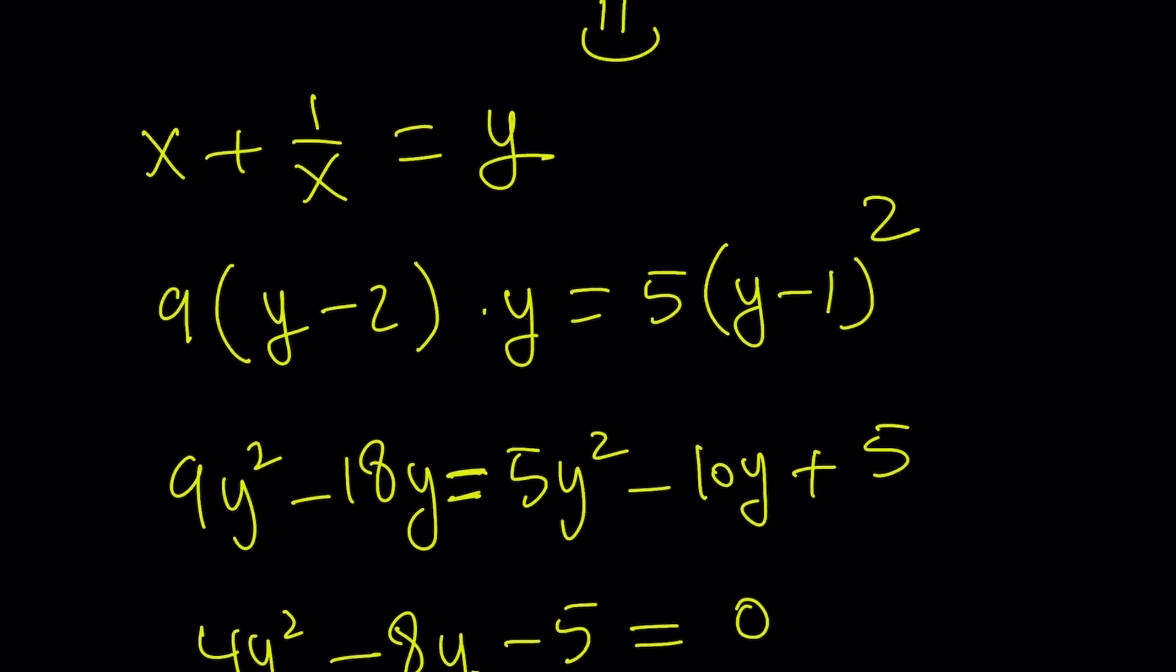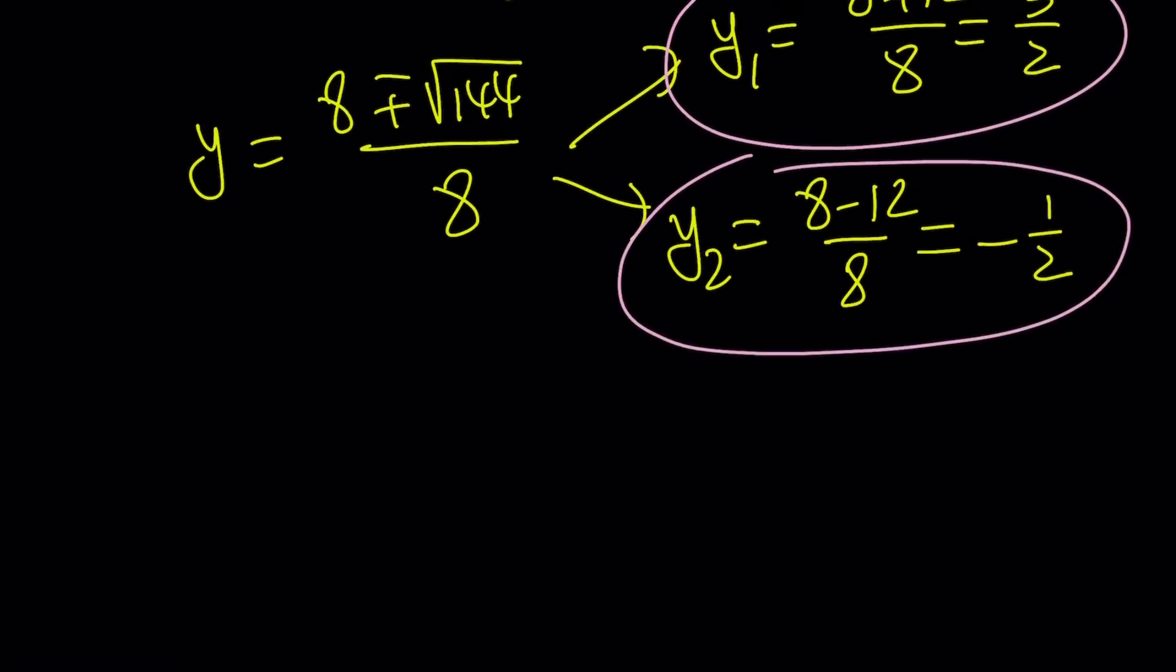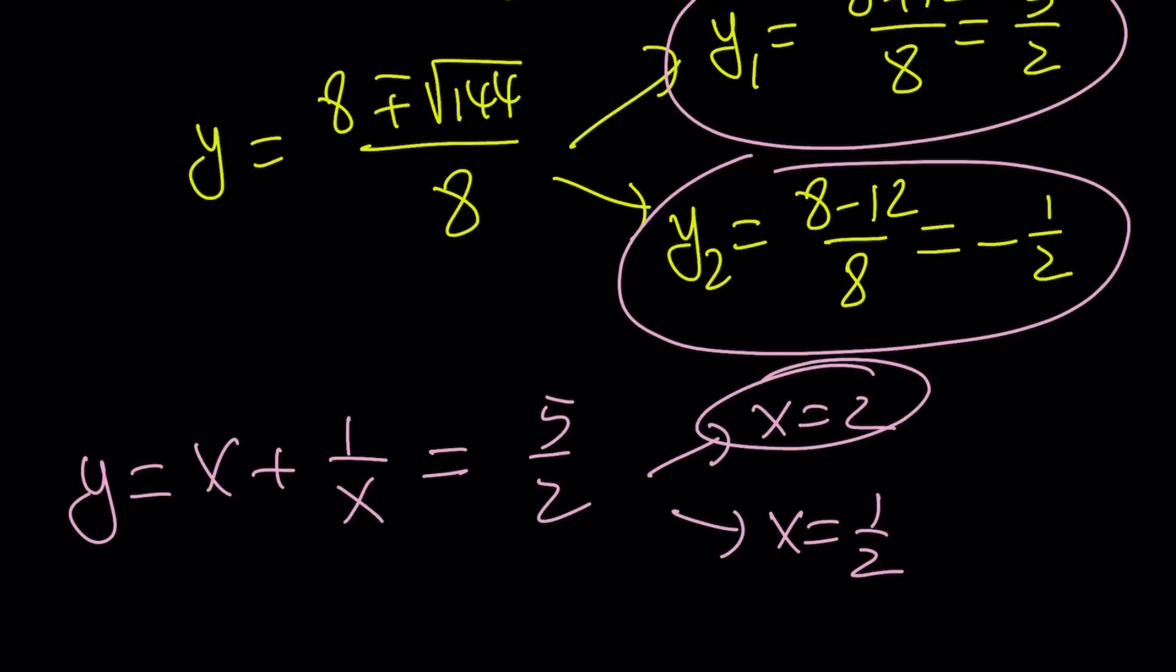Now what is y? y is x plus 1 over x. Awesome. Let's set it equal to x plus 1 over x. So if x plus 1 over x is 5 halves, I'm pretty sure you're going to find it very easily from here. x is either 2 or 1 half. Why? Because 2 plus 1 half is 5 halves, and for the same reason 1 half plus 2 is 5 halves. So we got two solutions, and yay, they're cool. But the second piece...